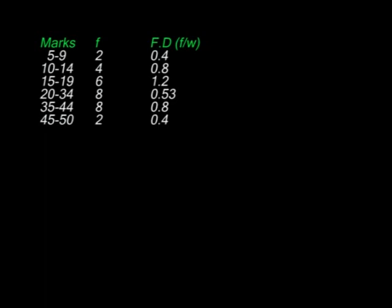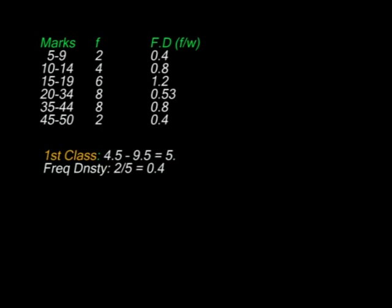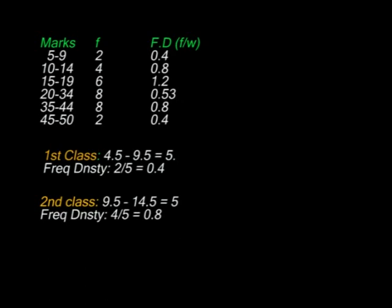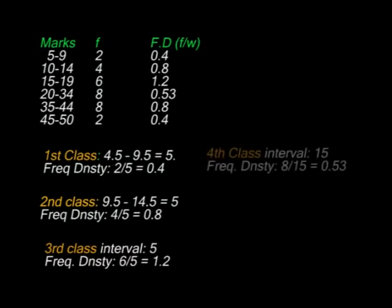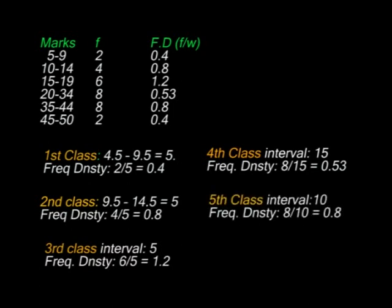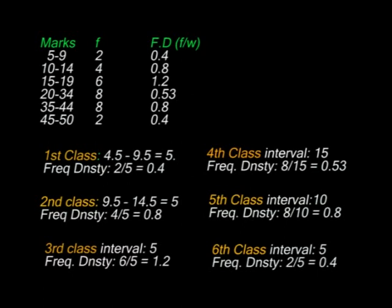We obtain the frequency density by dividing frequency over class size. For the first class the interval is 5. The second class also has interval 5; frequency is 4, so 4 over 5 is 0.8. The third class interval is also 5, giving frequency density 1.2. The fourth class, from 19.5 to 34.5, has an interval of 15; frequency is 8, so 8 over 15 is 0.53. The fifth class has interval 10; frequency density is 8 over 10, which is 0.8. The last class has interval 5; frequency density is 2 over 5, which is 0.4.